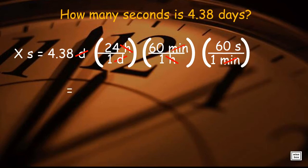To solve, we have 4.38 days times 24 times 60 then times 60, which results to 378,432 seconds, or 3.78 times 10 to the 5 seconds.